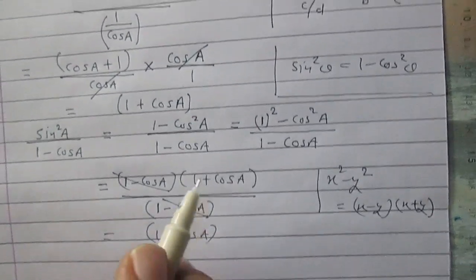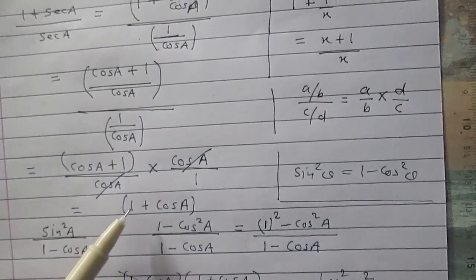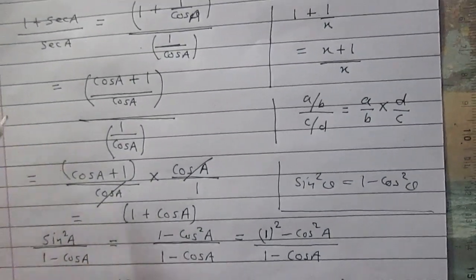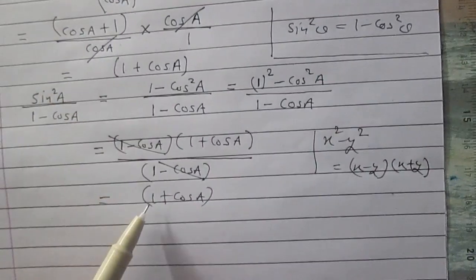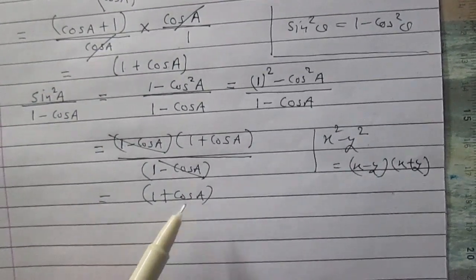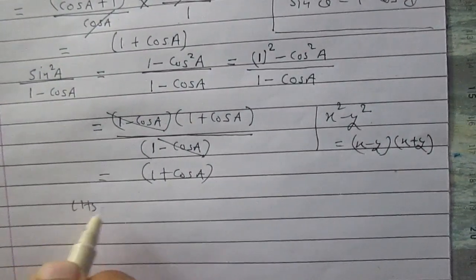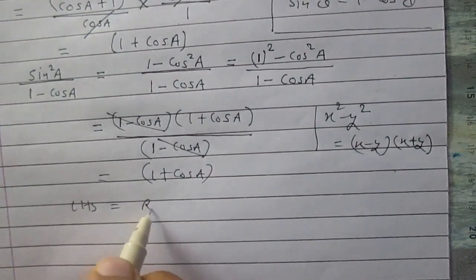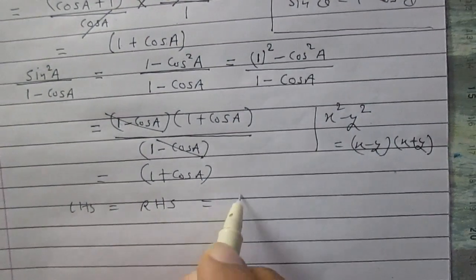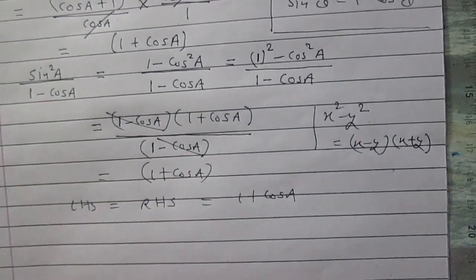So we see that the left hand side equals 1 plus cos a, and the right hand side is also equal to 1 plus cos a. Therefore, the left hand side is equal to the right hand side, which is 1 plus cos a. Hence proved.